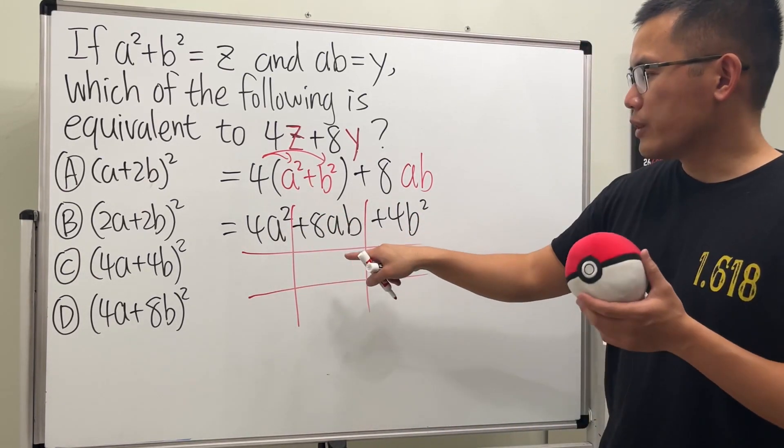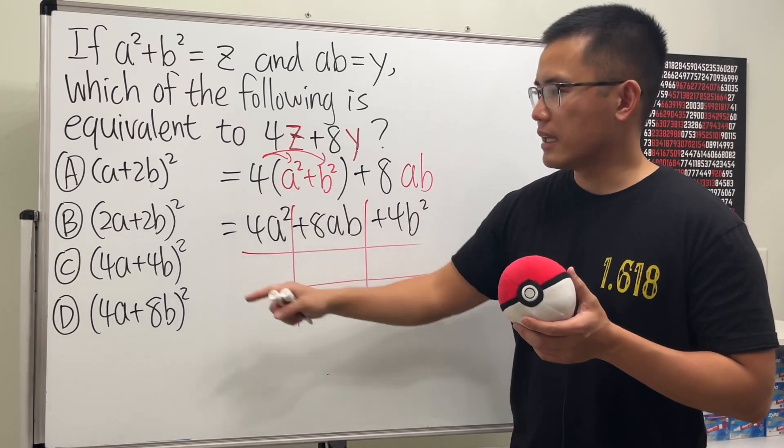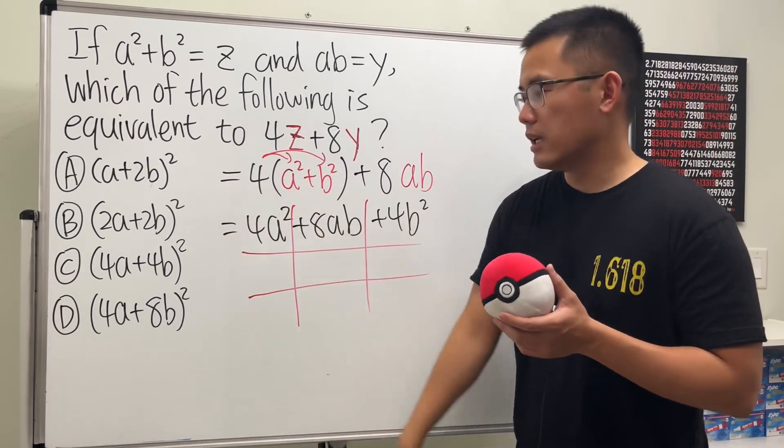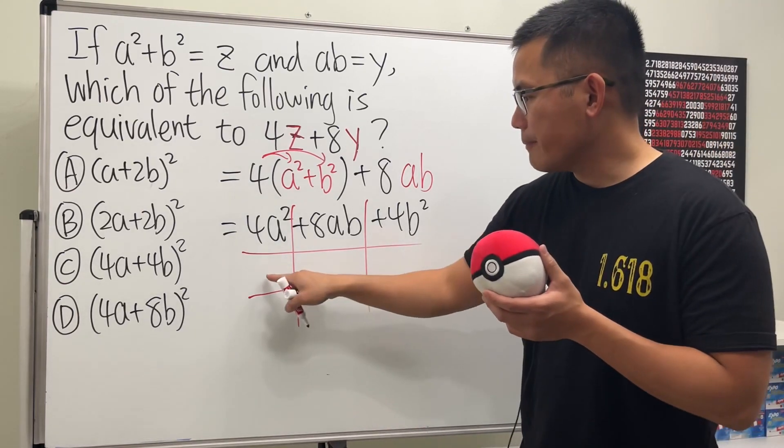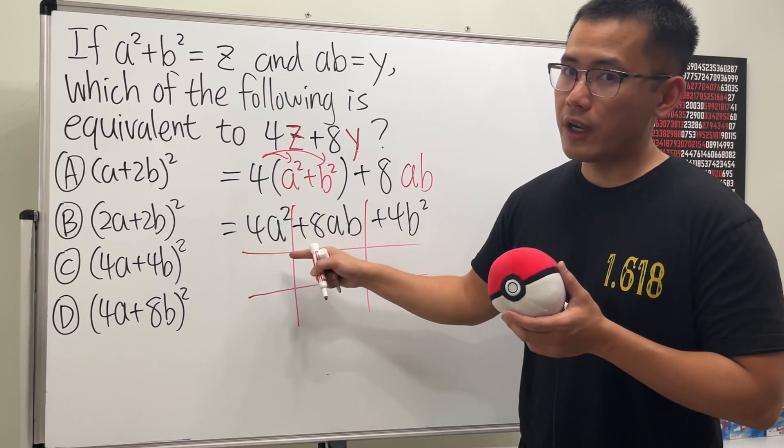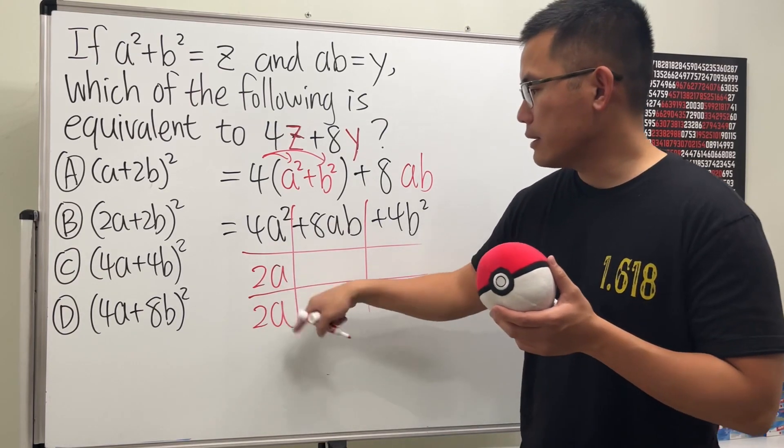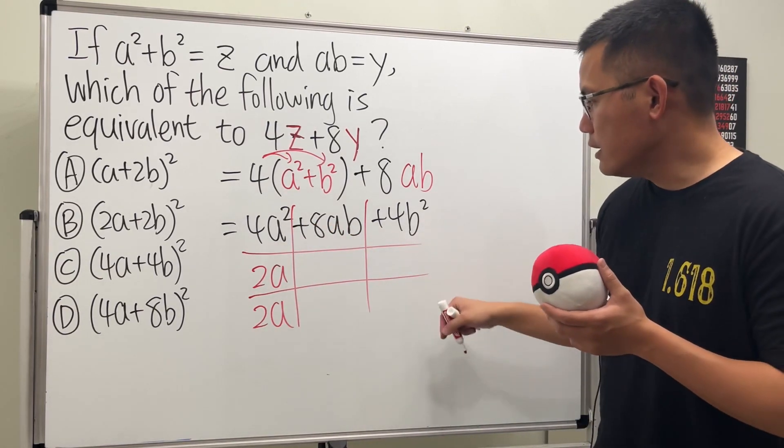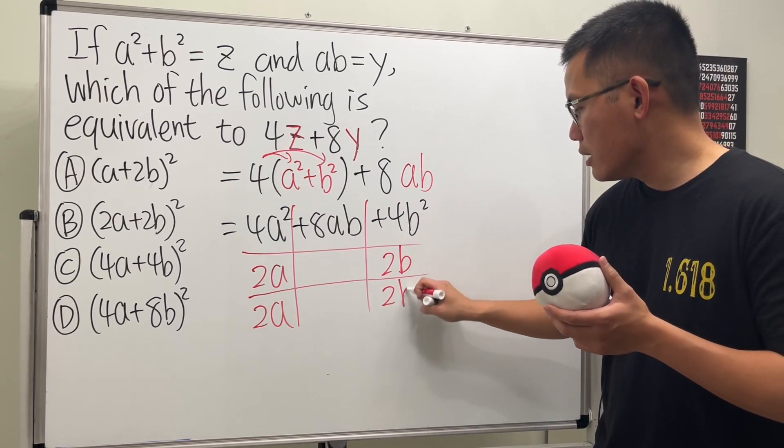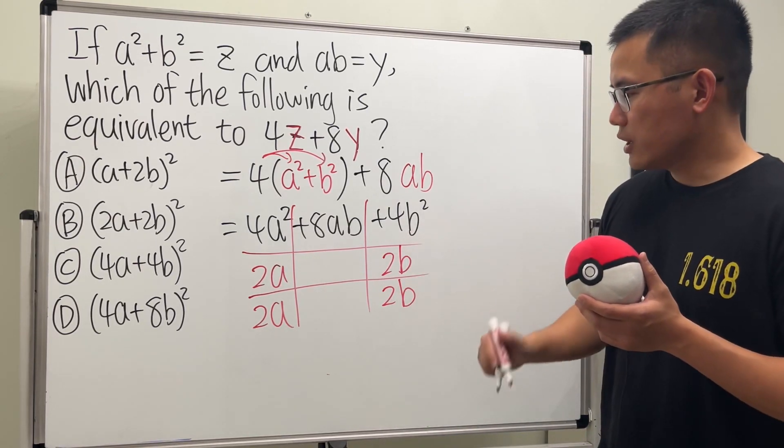I'll show you how we can do this using the tic-tac-toe form. Some of you might notice we can factor out a 4, but that's not one of the options, so we don't do that. We'll just factor it like this. Okay, to get 4a squared, the answer will be 2a times 2a. Right, that gives us 4a squared. And for this, let's put down 2b times 2b. That will give us 4b squared. Check this out.